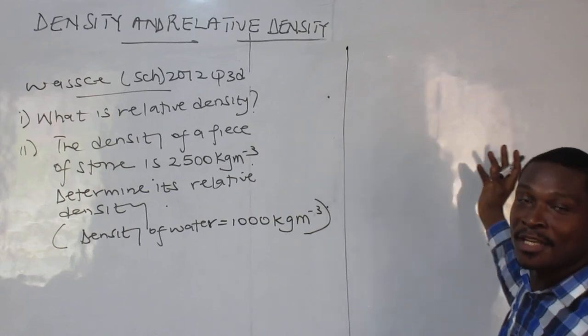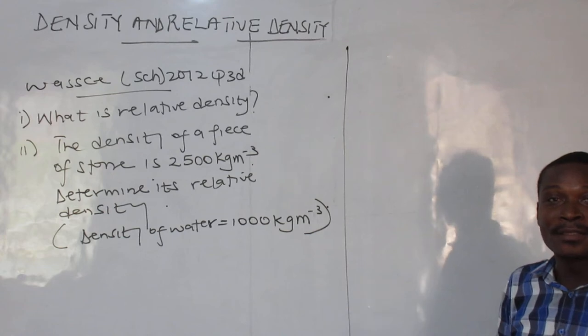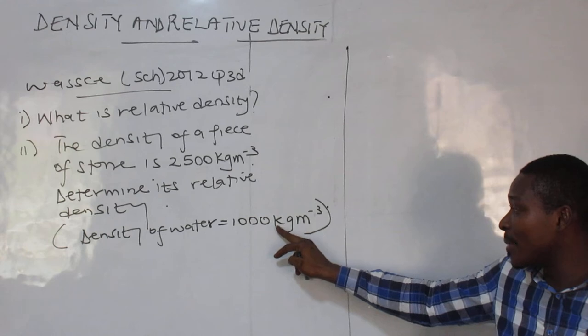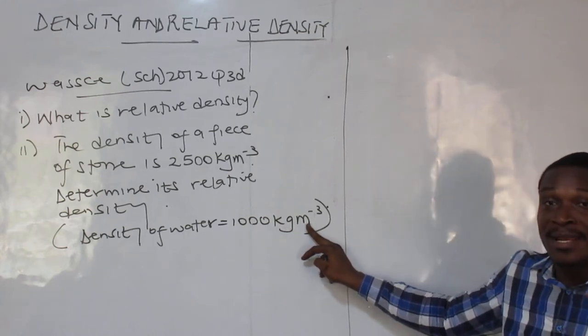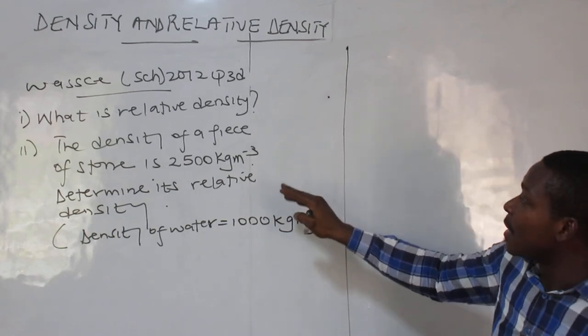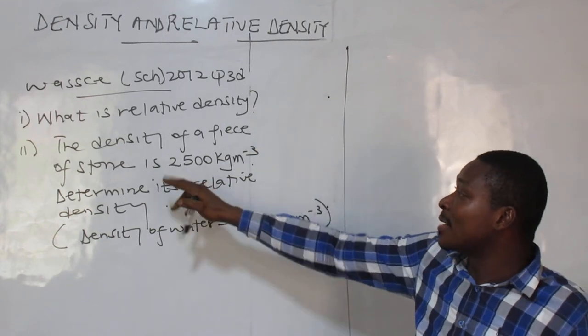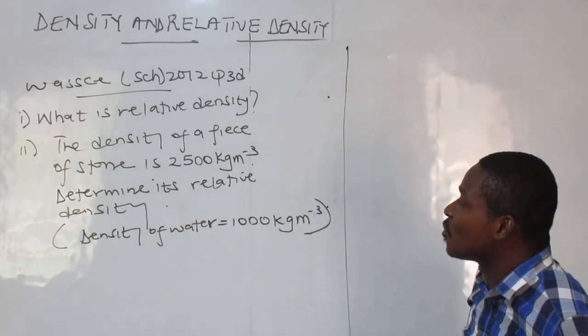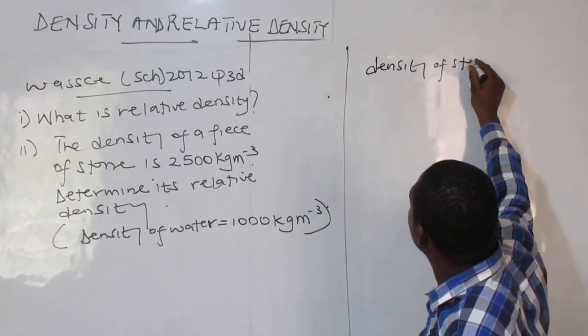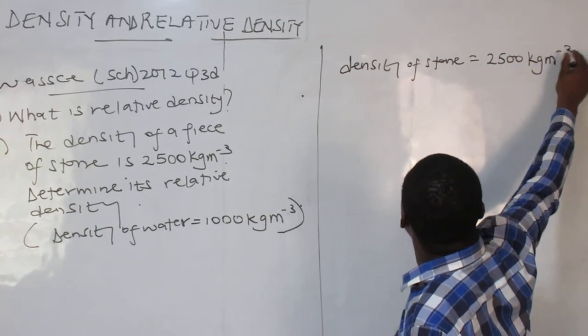As we saw in the definition, it is defined as the ratio of the density of a substance to that of water. The density of water is always known. If it is not 1000 kilogram per cubic meter, it will be in the sub-unit form which is 1 gram per cm cubed. Now, define relative density. So what is relative density? That is it. And the second part, the density of a piece of stone is this. So we have density of stone. Any time you get to face this question, the best thing for you to do is to list the things out. Please don't forget. Always list them out. It will make it very easy for you to solve.